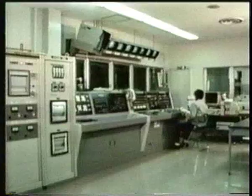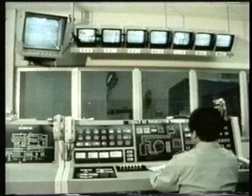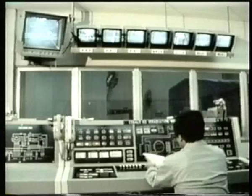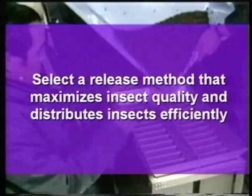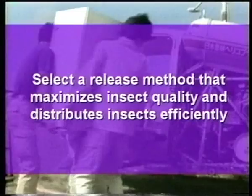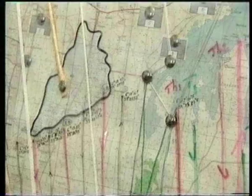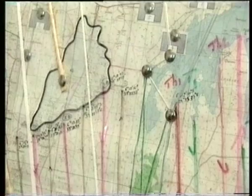Purchase sterile insects, or produce them in a mass rearing facility. Select a radiation dose that provides adequate sterility. Insects differ considerably in their sensitivity to the induction of dominant lethal mutations, and radiation doses may be different for each species. Select methods of handling and releasing sterile insects that maximize insect quality and distribute sterile insects efficiently, for example, the free release of adults from an aircraft. The global positioning system and automated control systems provide accuracy in releasing one or more species in the desired numbers over predetermined flight lines.